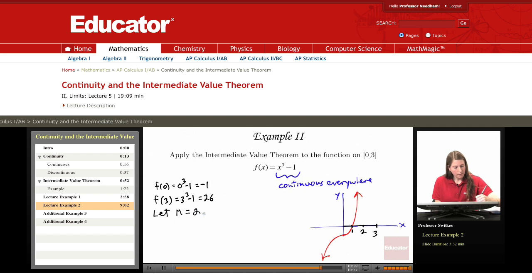So suppose for example that we want m to equal 2. Let's look at finding a c value in 0 to 3 such that f(c) equals 2. The intermediate value theorem guarantees us that such a thing exists.